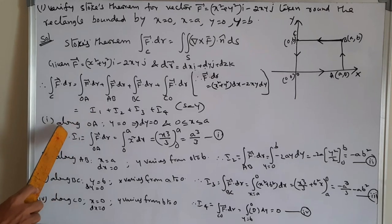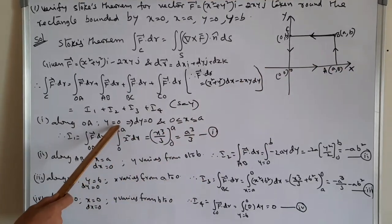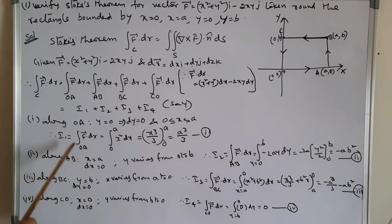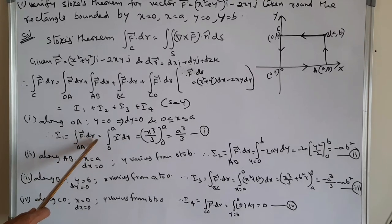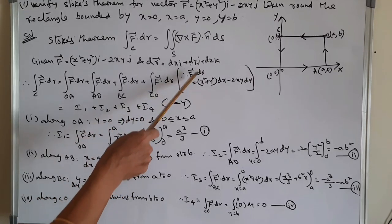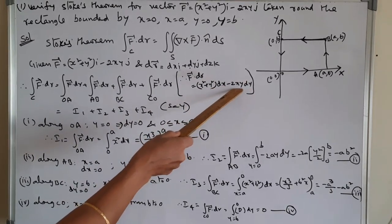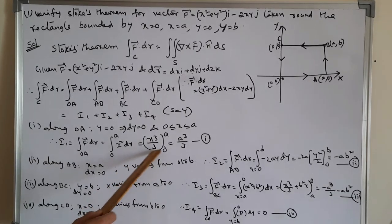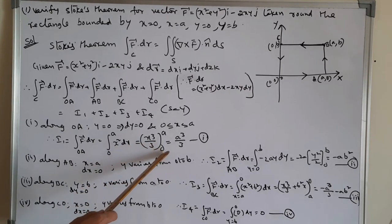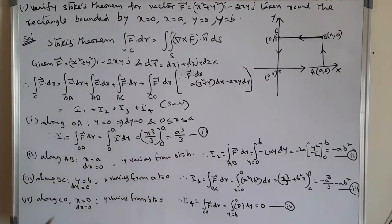First, I1: along OA, y = 0, so dy = 0, and x varies from 0 to a. Therefore I1 = integral over OA of F̄ · dr̄. Substituting y = 0 into F̄ · dr̄ = (x² + y²)dx − 2xy dy, we get only x² dx. Integrating from 0 to a gives x³/3, with limits 0 to a, so I1 = a³/3. Consider this as equation (I).